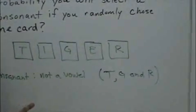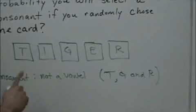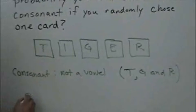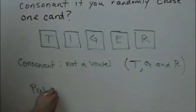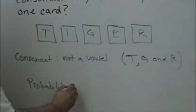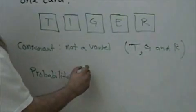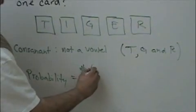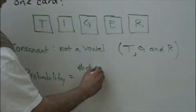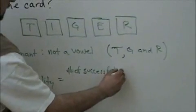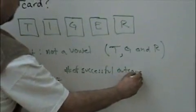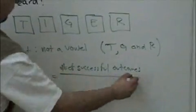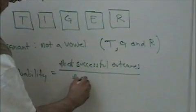So they want to know what's the probability that I select one consonant when I select a card. Then the probability, which is defined as the number of successful outcomes divided by the number of total outcomes.